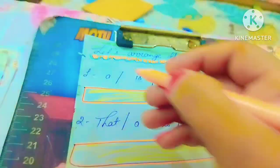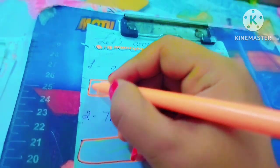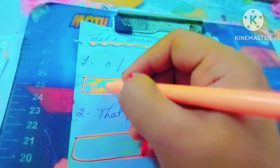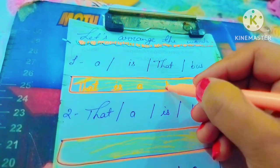So as you can see here we have to arrange the words. How do you arrange the words? See here, we will arrange the words: that is a bus.